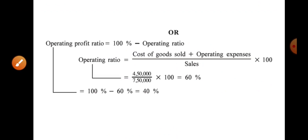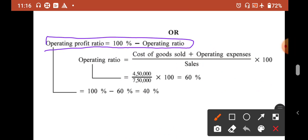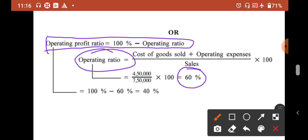Can we find operating profit ratio using 100 minus operating ratio? First find the operating ratio. Operating ratio is 60%, so 100 minus 60 = 40%. This way or that way, the answer will be the same.